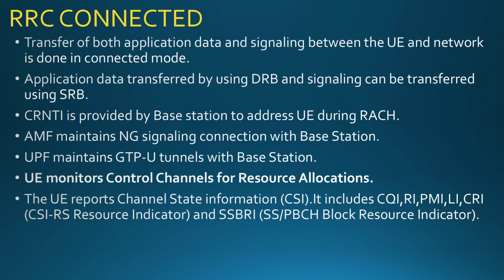The UE monitors the control channel for resource allocation when in RRC Connected mode. The UE also reports Channel State Information (CSI), which includes: CQI (Channel Quality Indicator), RI (Rank Indicator), PMI (Precoding Matrix Indicator), LI (Layer Indicator), CRI (CSI-RS Resource Indicator), and SSB-RI (SS/PBCH Block Resource Indicator).